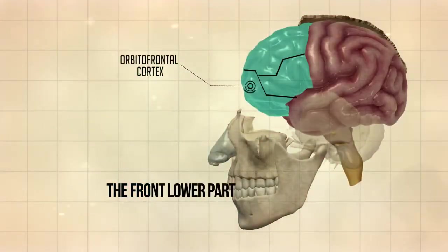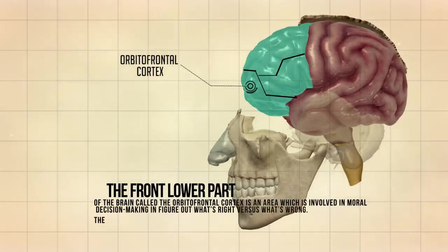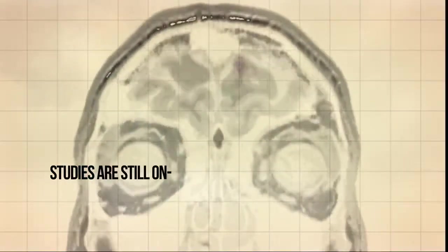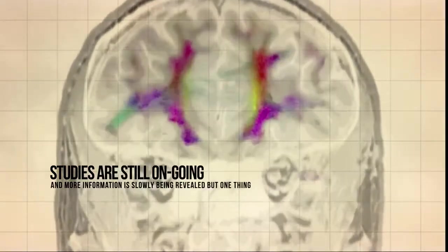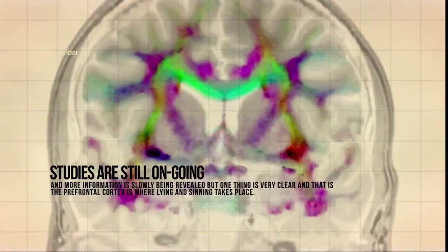The front lower part of the brain called the orbital frontal cortex is an area involved in moral decision-making, in figuring out what's right versus what's wrong. They have noticed a similar pattern in the brain scans of criminals in this region. Studies are still ongoing and more information is slowly being revealed, but one thing is very clear and that is the prefrontal cortex is where lying and sinning takes place.